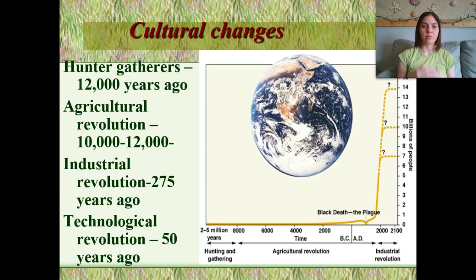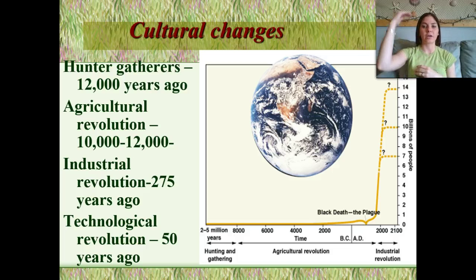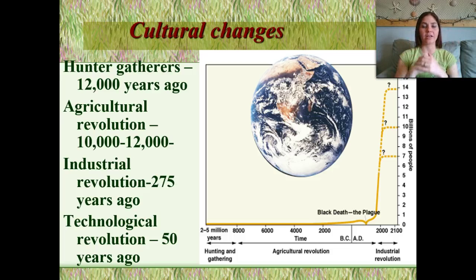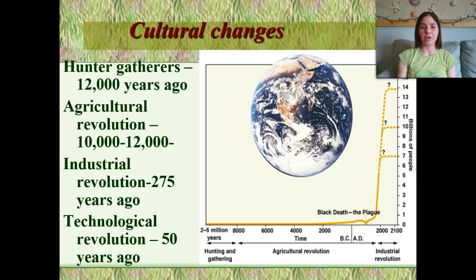Some predictions are we're going to hit carrying capacity at 10 billion. Some say we're going to hit it at 12 billion. So we really don't know when we're going to hit that carrying capacity and how many people Earth is going to be able to support.